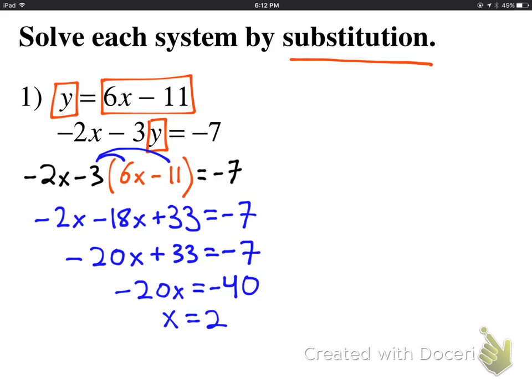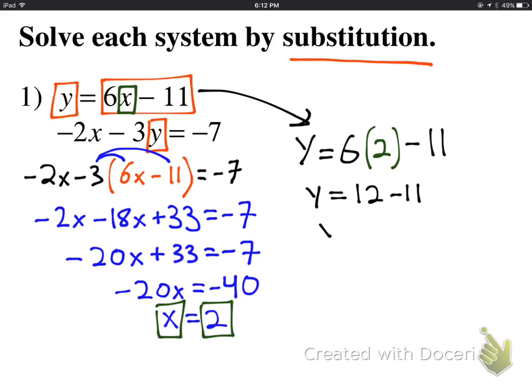To find out what y is, I can plug x back into either equation. I'm going to choose the top one. So y equals 6 times 2 minus 11. And now it's just a simple matter of solving for y. Now, the solution is 2 comma 1.